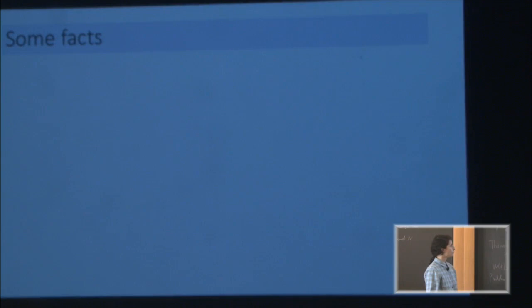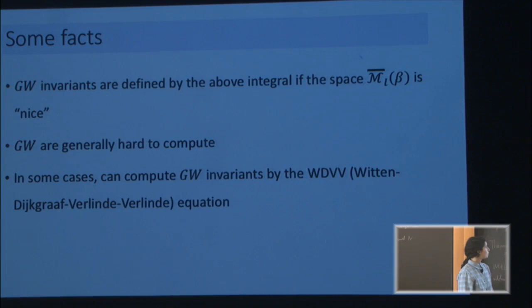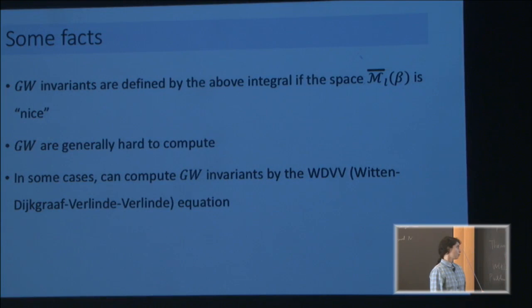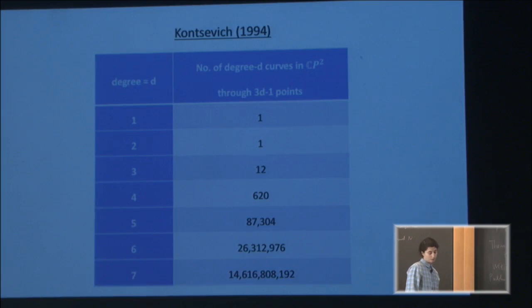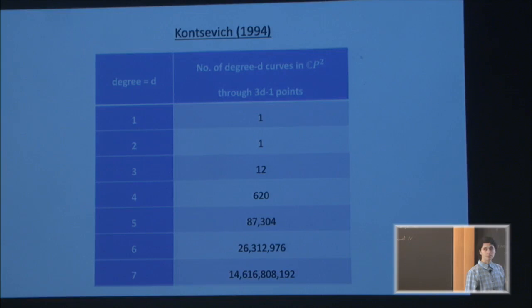Whenever possible, it does give reasonable invariants. Computing them is a different story. One hands-on way of computing them is using WDVV equations. They do make an awesome computational tool, and in fact we have an example from a 1994 paper by Kontsevich-Manin, where they use WDVV equations to produce a recursion formula that allows computation of all existing invariants for CP2. These are the sample values they give in that paper.